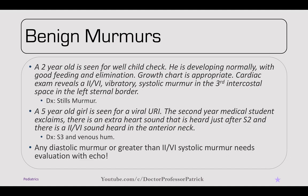Starting with benign murmurs, a two-year-old at a well-child check has a two-out-of-six vibratory systolic murmur in the third intercostal space at the left sternal border — this is a Still's murmur. Any systolic murmur that is two-out-of-six or less is most likely benign. A five-year-old girl has an extra heart sound heard just after S2 and a two-out-of-six sound in the anterior neck — an S3 and venous hum. Both are normal in children or extremely conditioned athletes. Any diastolic murmur or murmur greater than two-out-of-six needs to be evaluated with an echo in pediatrics.